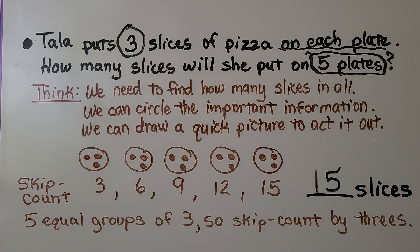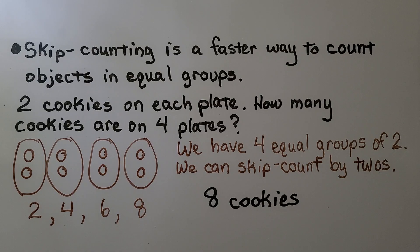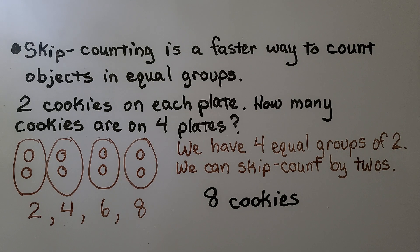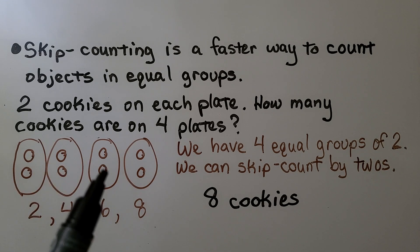Skip counting by threes is much quicker than counting on by ones. Skip counting is a faster way to count objects in equal groups. There are two cookies on each plate. How many cookies are on four plates? That means we have four equal groups of two and we can skip count by twos: two, four, six, eight. That's eight cookies.